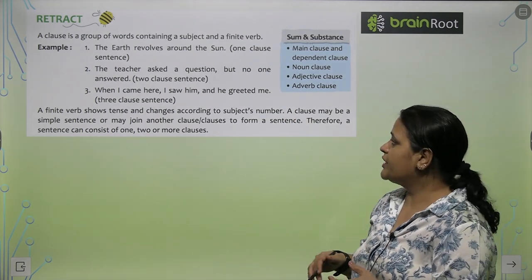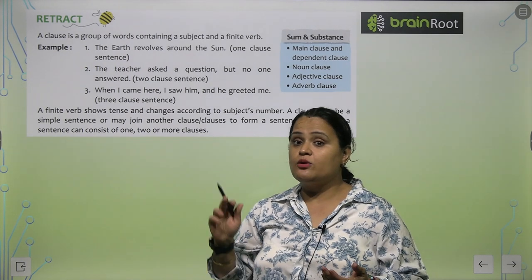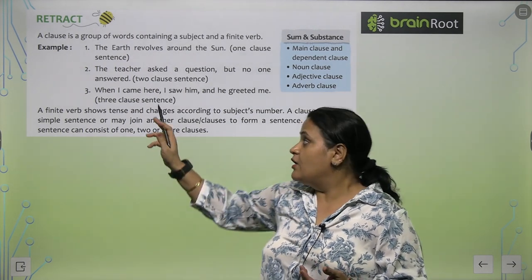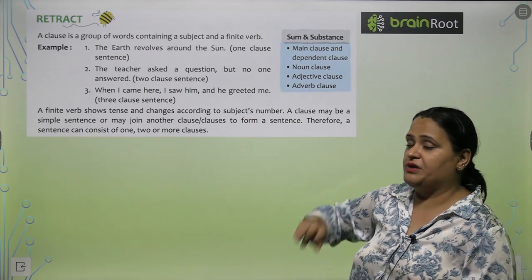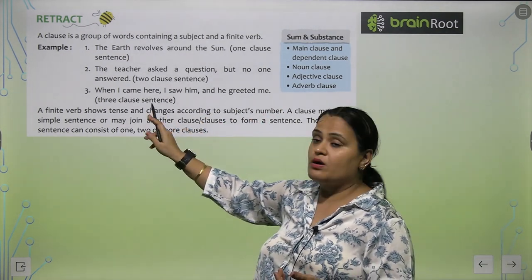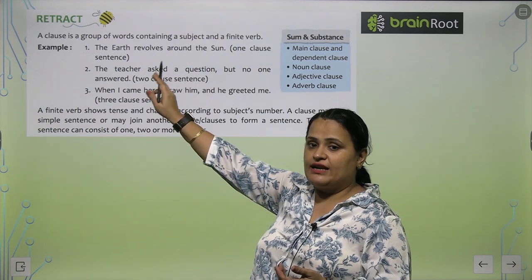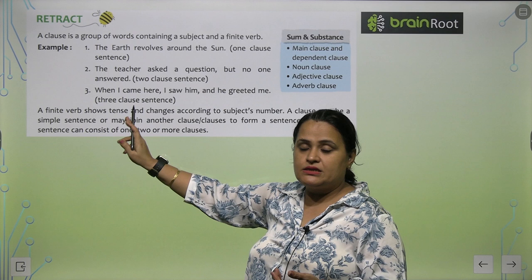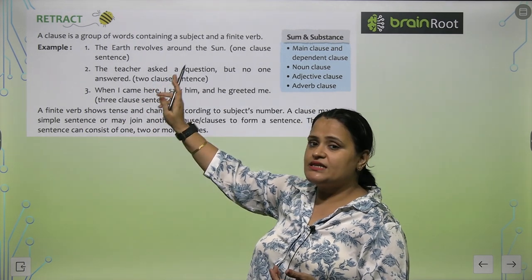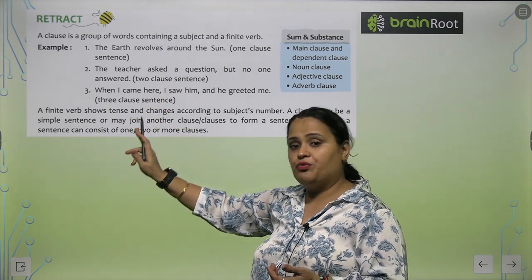The teacher asked a question but no one answered. Yeh kya hai? Two clause sentences. When I came here, I saw him and he greeted me. Ye hai three clause sentence. This is in one line, this is in two lines and this is in three lines. Also one clause sentence, two clause sentence and three clause sentence.